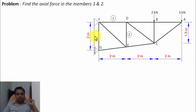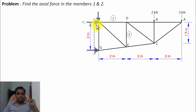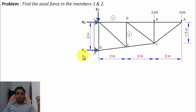Initially, what we're going to do is we'll try to find the reaction at supports. At point F, we have a hinged support, and there are going to be two forces — one horizontal while the other vertical. At point G, we have a roller support and we're going to have a reaction normal to this surface. So this over here is what you call VF, this is HF, and this is what we call RG.